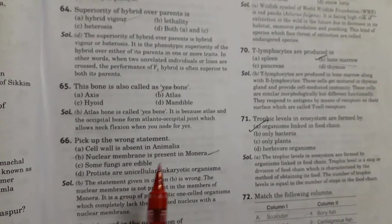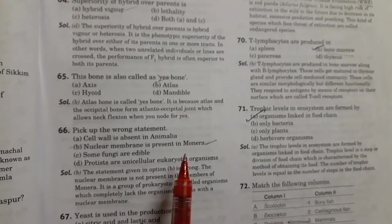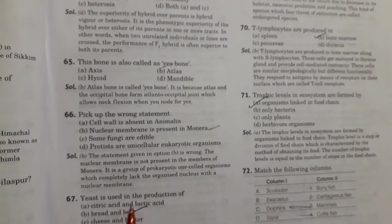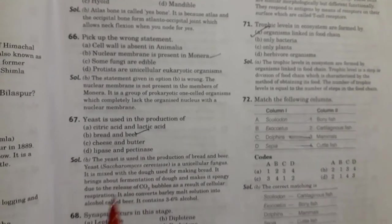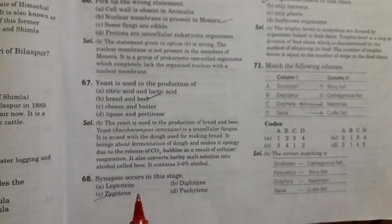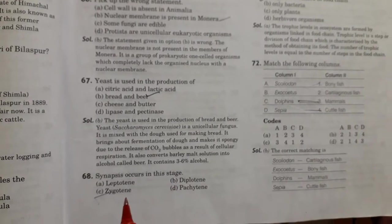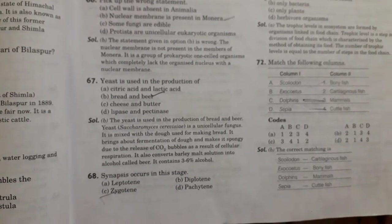Then pick up the wrong statement. So wrong statement: nuclear membrane is present in monera. Option B is right. Then yeast is used in the production of bread and beer. Next is synapses occur in the stage. Option C is right.